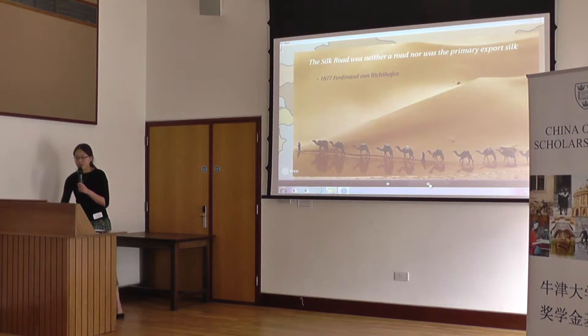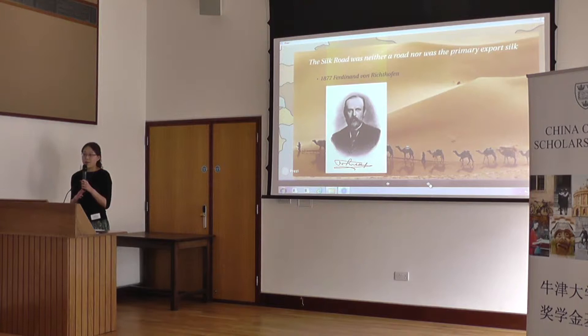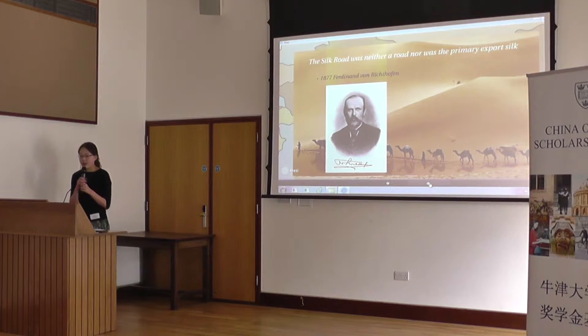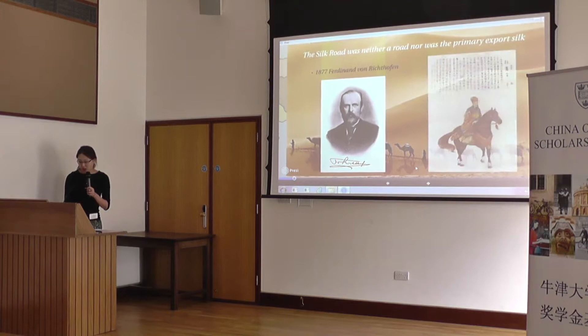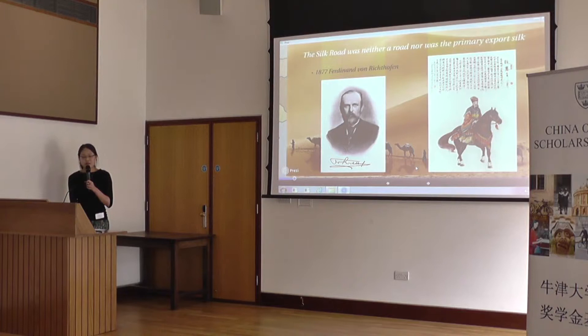Let us look at some traditional definitions of the term Silk Road. It was actually defined in 1877 by a German geographer called Ferdinand von Richthofen. In his foundational book on China, he first defined the Silk Road as an east-west route from Han Dynasty China to the Western Roman Empire, along which silk was traded. The traditional starting point was 114 BC, the year of Zhang Qian's embassy to the west, initiated by the Han Emperor Han Wudi. This definition was used throughout almost the entire 20th century.